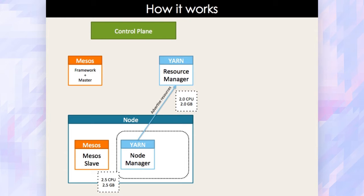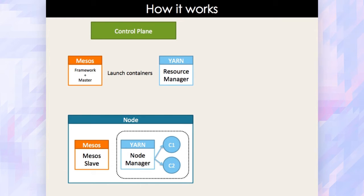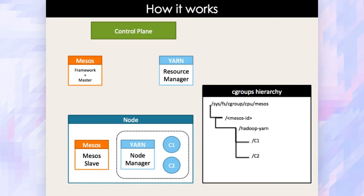Once a node manager is registered with Yarn's resource manager, the resource manager can now start launching containers. This node manager, when it is launched, gets mounted under the Cgroups hierarchy for Mesos. And since the node manager also supports Cgroups, we configure it to mount its Cgroup hierarchy under the Mesos Cgroup hierarchy so that we can have a nice top-down enforcement of resource limits.